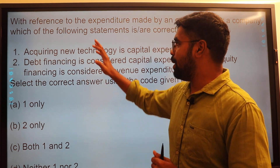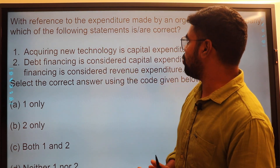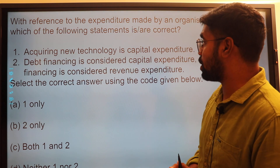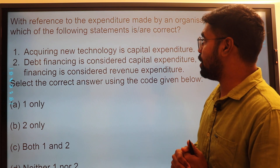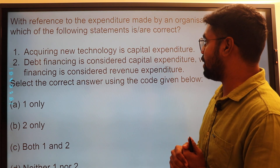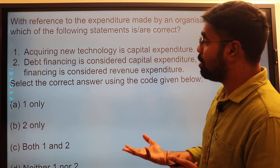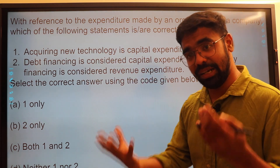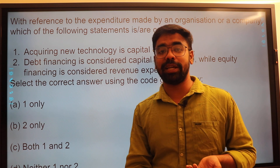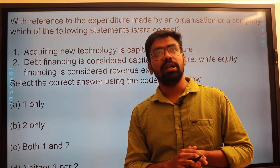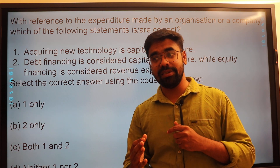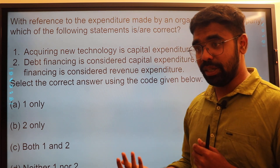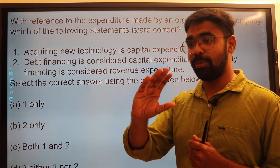In this video, it's a reference to the expenditure made by an organization or company — which of the following statements is correct? Let's look at our general public expenditure receipt, capital expenditure, or revenue receipt expenditure.